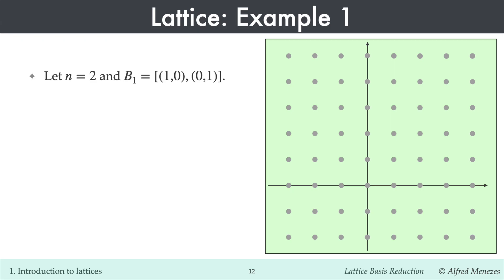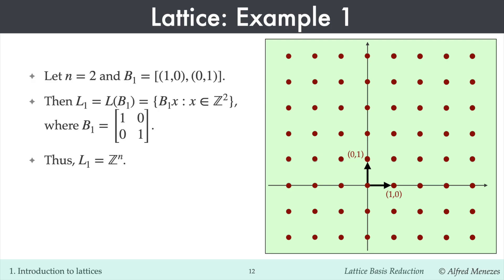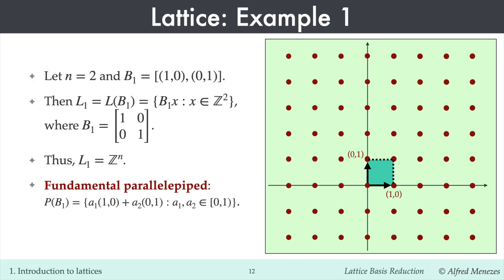Here is an example of a simple two-dimensional lattice L1 with basis vectors 1,0 and 0,1, which we recognize as the standard unit vectors. The elements of L1 are all integer linear combinations of these unit vectors — in other words, L1 is the set of all integer coordinate points in the plane. The fundamental parallelepiped associated with basis B1 is the set of all linear combinations of the basis vectors where the scalars A1 and A2 are real numbers between 0 and 1, not including 1. This region is the green square shown in the figure.